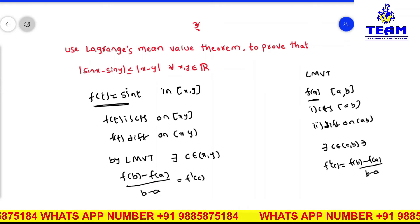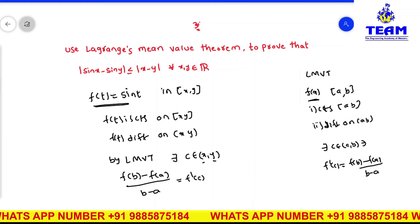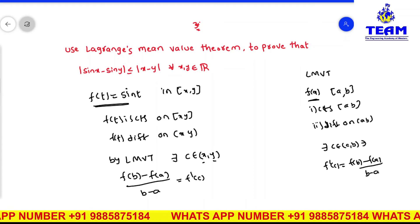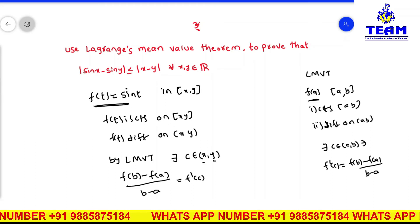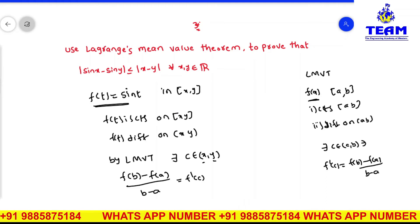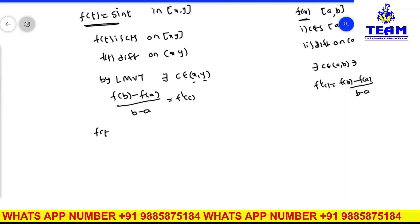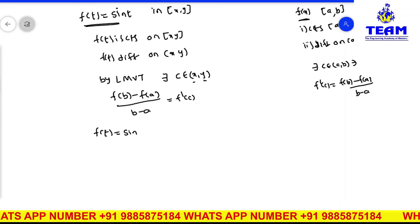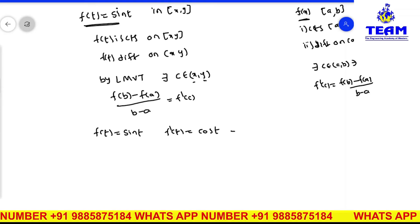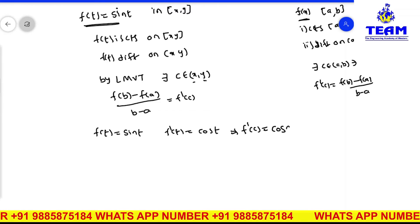In place of b we have y, and in place of a we have x. So we substitute a equal to x and b equal to y, and we need to find f dash of c. To get f dash of c, first find f dash of t and then substitute c. If f of t is equal to sin t, then f dash of t is equal to cos t, which implies f dash of c is equal to cos c.